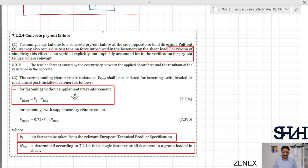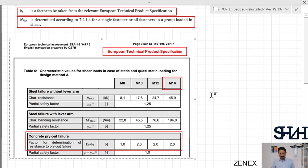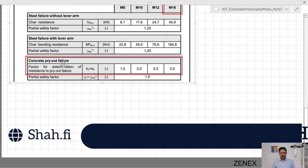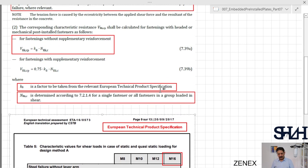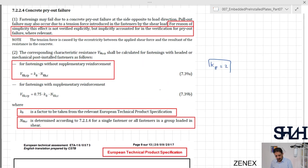We go with k_8 times N_Rk,c. k_8 is a factor that needs to be taken from relevant European Technical Product Specification. Here I have a screenshot from that - for M16 which is our fastener diameter, concrete pry-out failure k_8 is taken as 2.